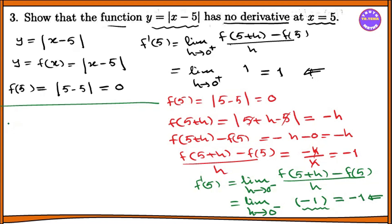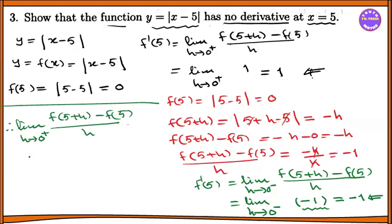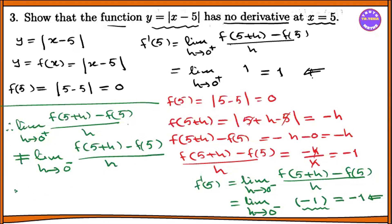Therefore, limit h tends to 0 plus of f of 5 plus h minus f of 5 by h is not equal to limit h tends to 0 minus of f of 5 plus h minus f of 5 by h. So f has no derivative at x equal to 5.